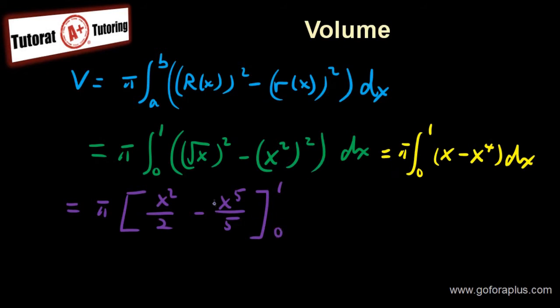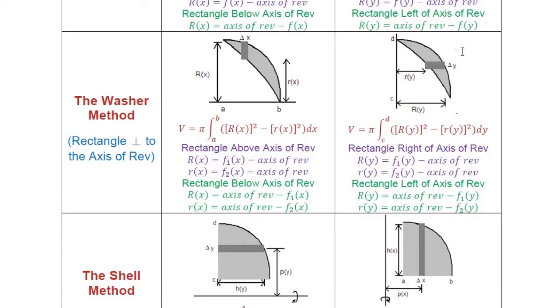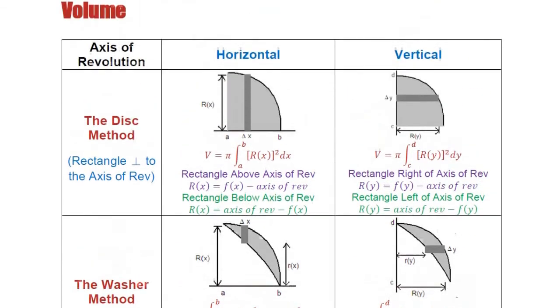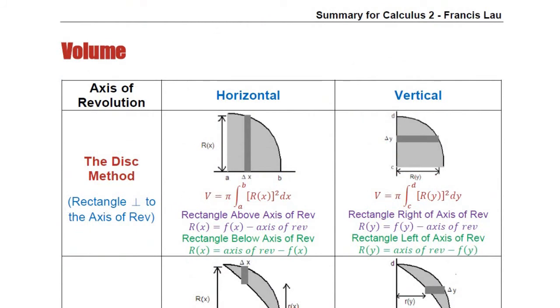Now if you plug in 0, it will be all 0. If you plug in 1 now, this is equals to 1 half minus 1 fifth times pi. If you simplify this, this is going to give you 3 pi over 10. And this is basically my answer for this question. Now if you have more questions on the volume related to these notes, please visit my website go4aplus.com.